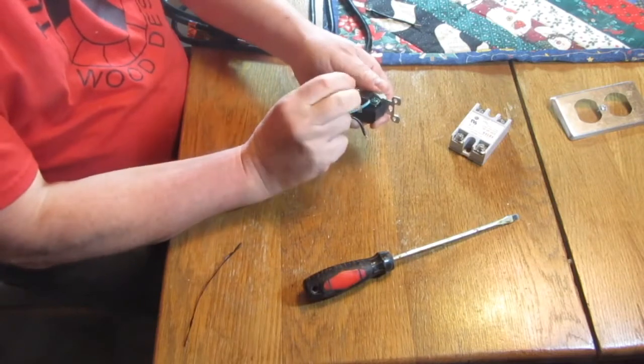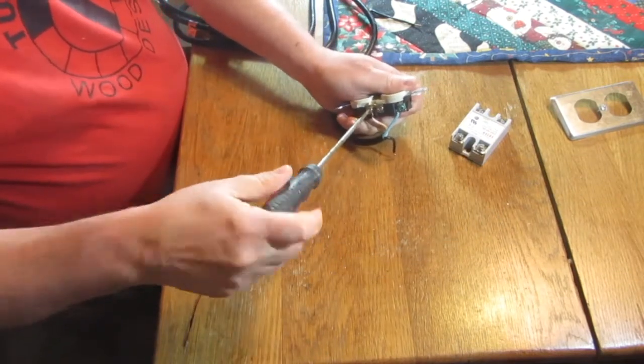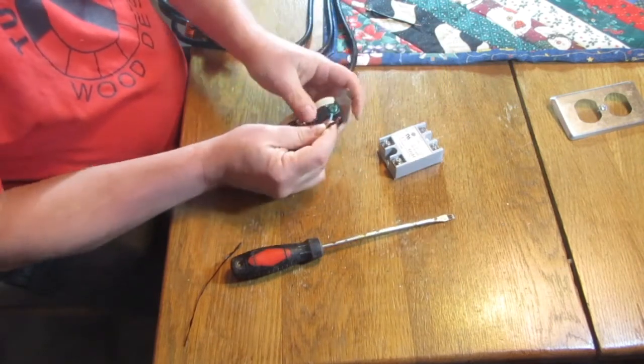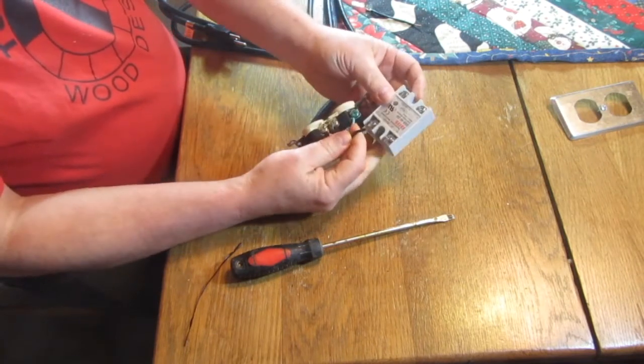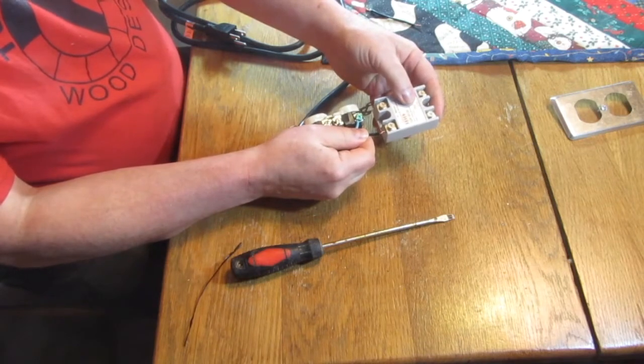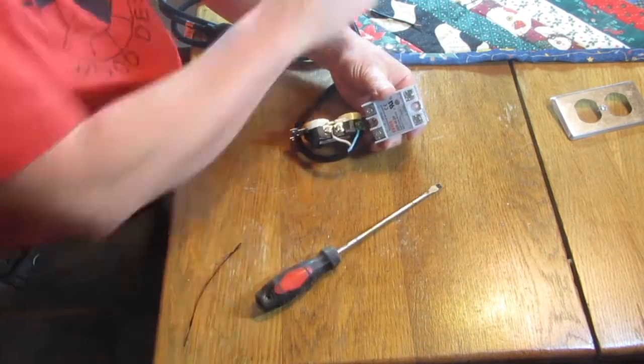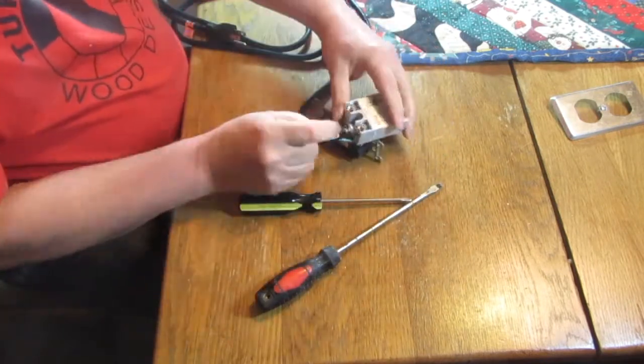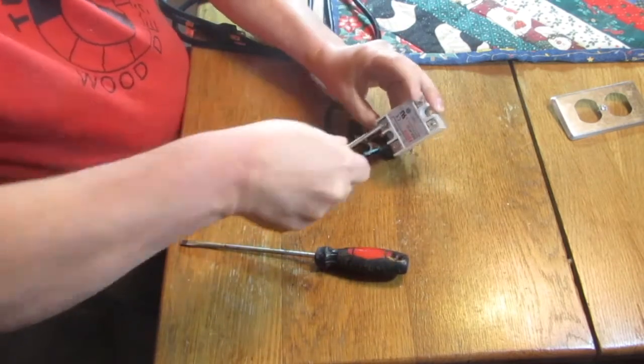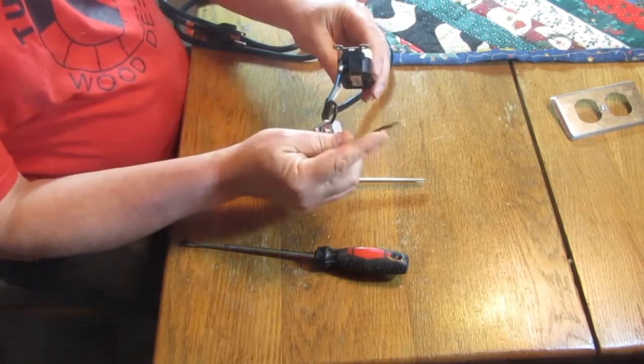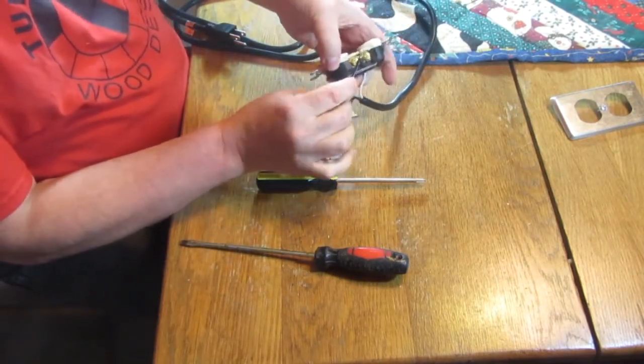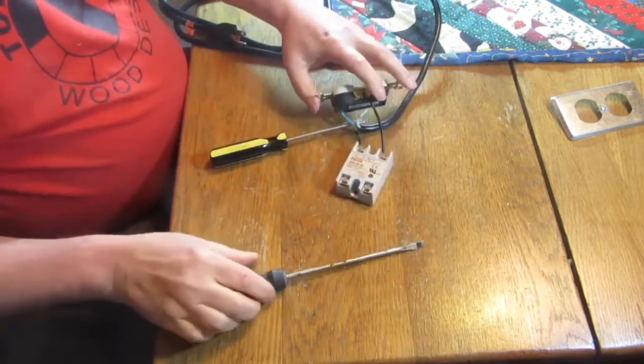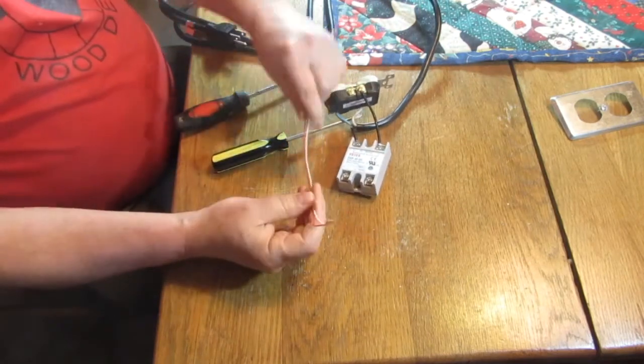I take the black wire and put it in on the number one terminal on the relay. Then on the number two terminal on the relay, I take my little short piece of wire, put that on, and hook the other end of that short wire to the gold terminal on the plug.